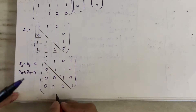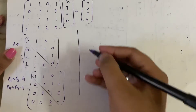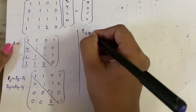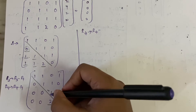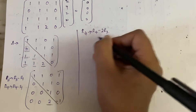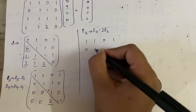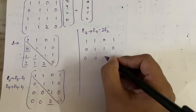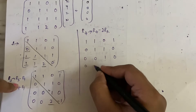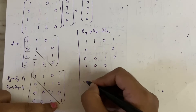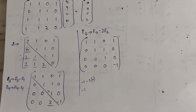Now identify the diagonal again. Below the diagonal the only remaining non-zero element is the 2 in row 4. To make it zero, apply R4 = R4 − 2·R3. The first two entries are already zero. For the third entry: 2 − 2(1) = 0. For the fourth: −1 − 2(0) = −1. So row 4 becomes (0, 0, 0, −1).